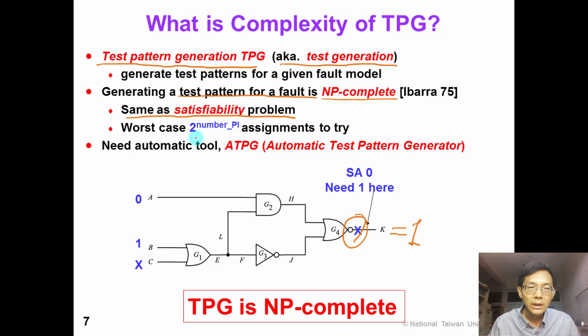In the worst case, we will need to try 2 to the number of primary inputs assignments before we can find a solution. Therefore, it is impossible to do it by human effort. We need automatic tool ATPG to help us.